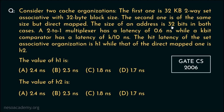The size of the address is 32 bits in both cases. A 2-to-1 multiplexer has a latency of 0.6 nanoseconds, while a k-bit comparator has a latency of k/10 nanoseconds. The hit latency of the set associative organization is H1 while that of the direct mapped one is H2. We need to find the values of H1 and H2.